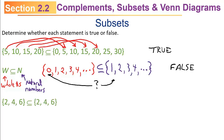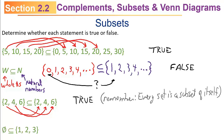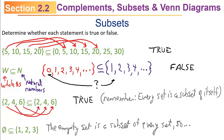Is the set {2, 4, 6} a subset of {2, 4, 6}? Every set is a subset of itself, and by checking: 2 appears on both sides, 4 appears on both sides, 6 appears on both sides. That is true. Is the empty set a subset of {1, 2, 3}? The empty set is a subset of every set, so it doesn't matter what's on the right — that statement is true.